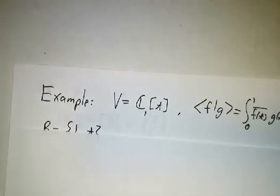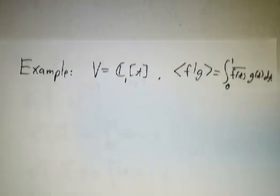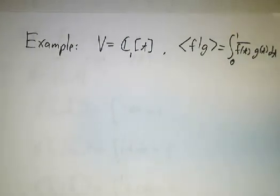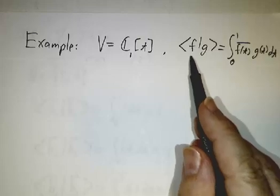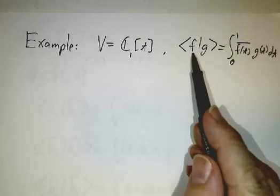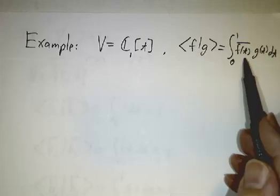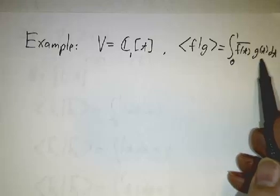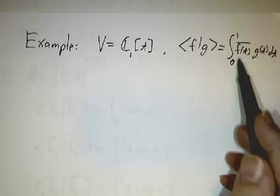Let's work an example. Our example is going to be the space of linear polynomials. We're going to use the L2 inner product, so the inner product of one polynomial with another: you take the conjugate of the first, multiply by the second, and integrate from 0 to 1.